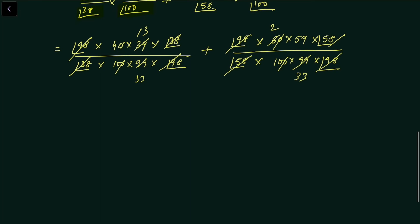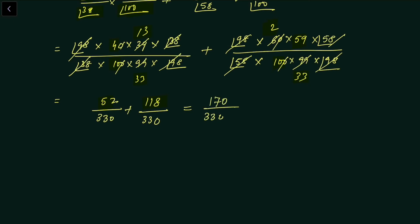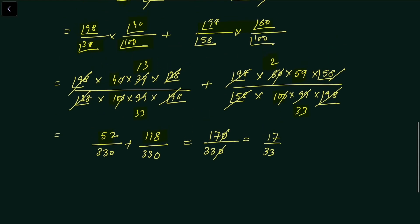What remains is: numerator has 13 × 4 = 52, denominator has 33 × 10 = 330. For the section B term: 59 × 2 = 118, denominator 330. Adding: 52 + 118 = 170, over 330. This simplifies to 17/33. So the answer for Part A — probability that you and your friend are in the same section — is 17/33.